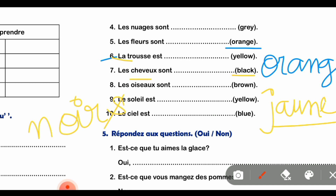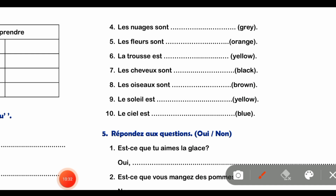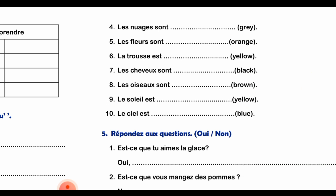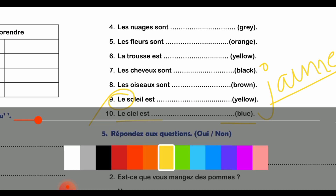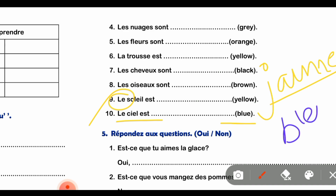Black को 'noir', N-O-I-R बोलते हैं। 'Chevaux' plural है इसलिए पीछे S add होगा। 'Les oiseaux sont dash brown' - birds को brown color का बताएंगे। Brown को French में 'brun', B-R-U-N बोलते हैं। Birds plural हैं इसलिए पीछे S add होगा। 'Les oiseaux à yellow' - 'jaune', J-A-U-N-E - कोई change नहीं क्योंकि singular और masculine है।